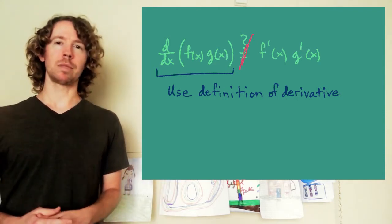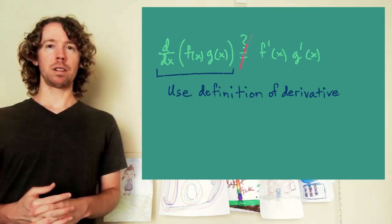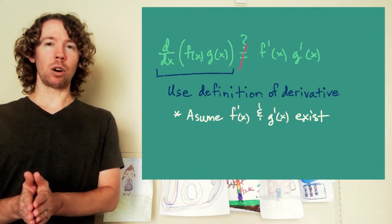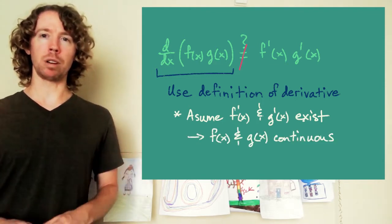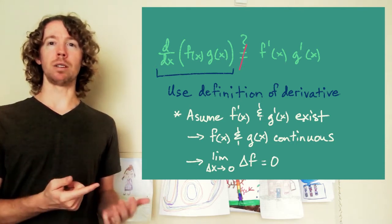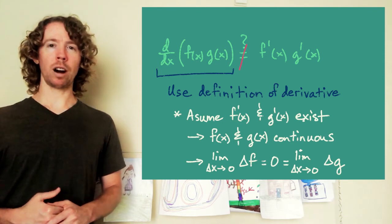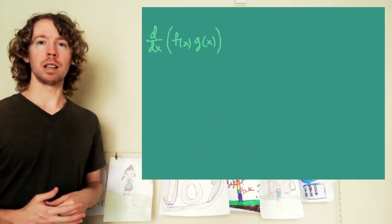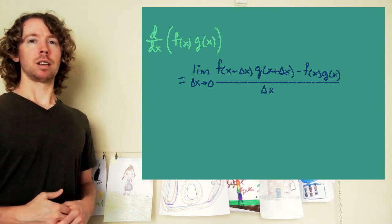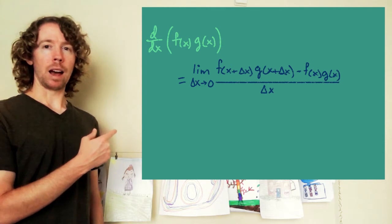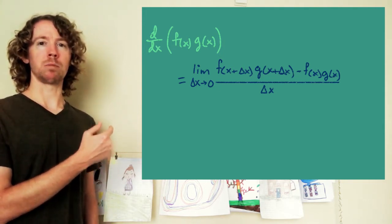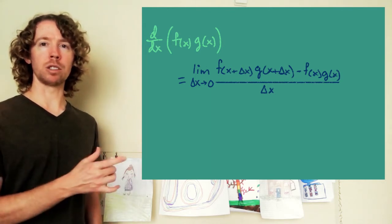If I want to use the definition of derivative, I'm going to assume that I can find the derivative of f and the derivative of g, so both functions have to be continuous at the points I'm looking at. That means the limit as delta x goes to 0 of the change in f has to be 0, and the same for g. So the derivative of f times g is the limit as delta x goes to 0 of y2 minus y1 over delta x — where y2 is f(x + Δx)·g(x + Δx) and y1 is f(x)·g(x).